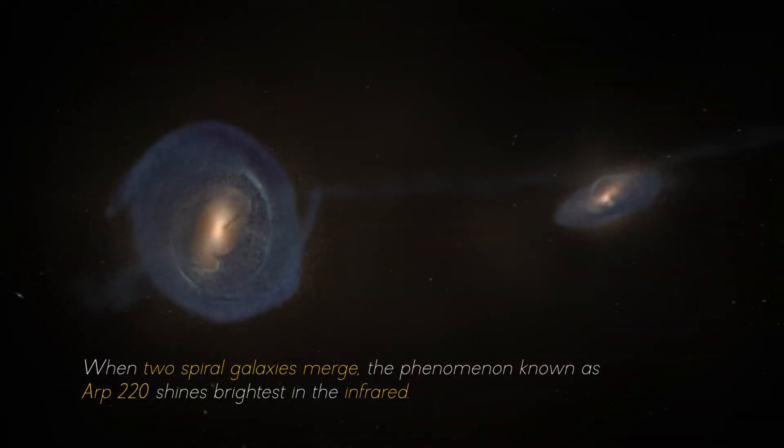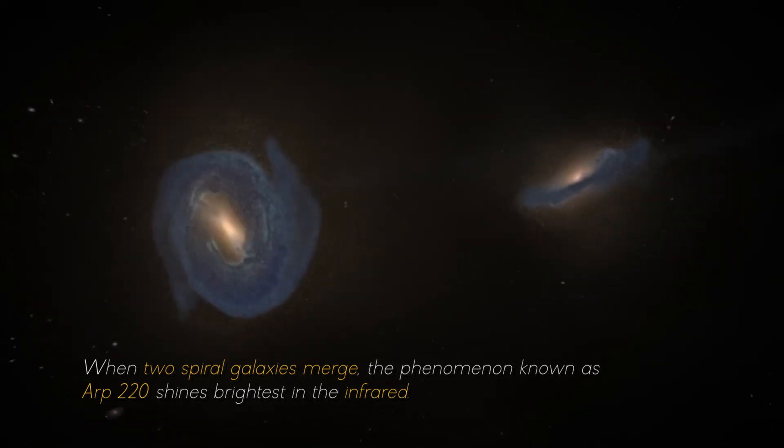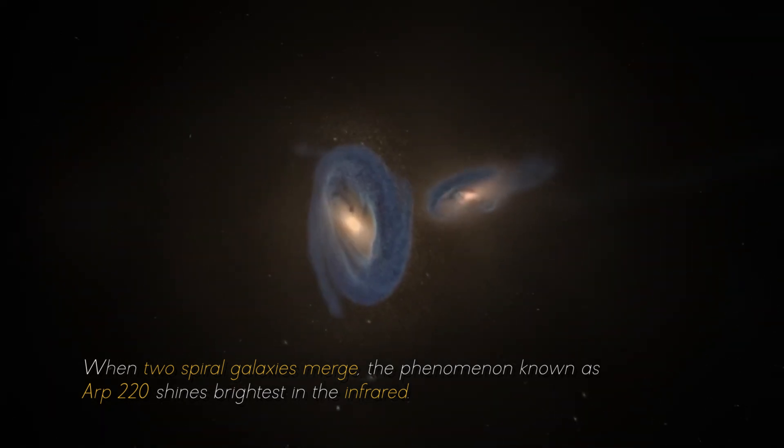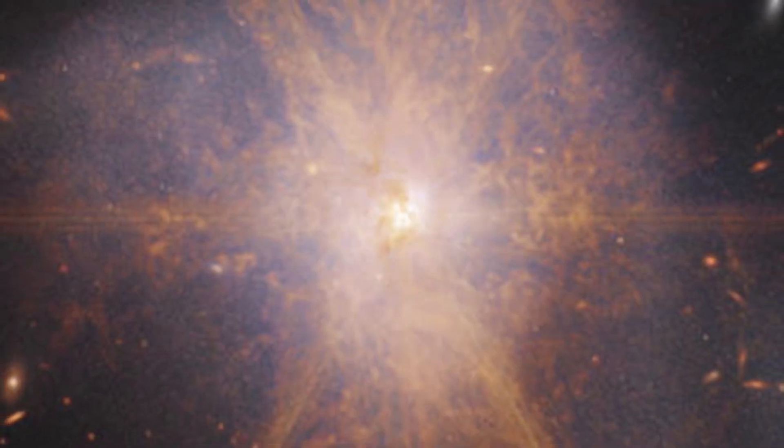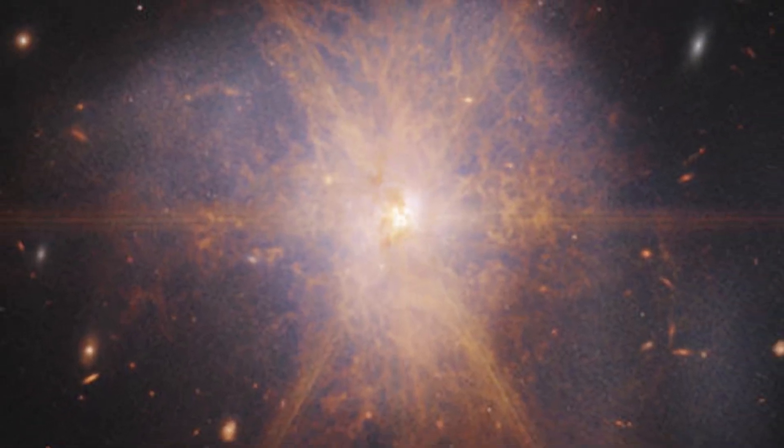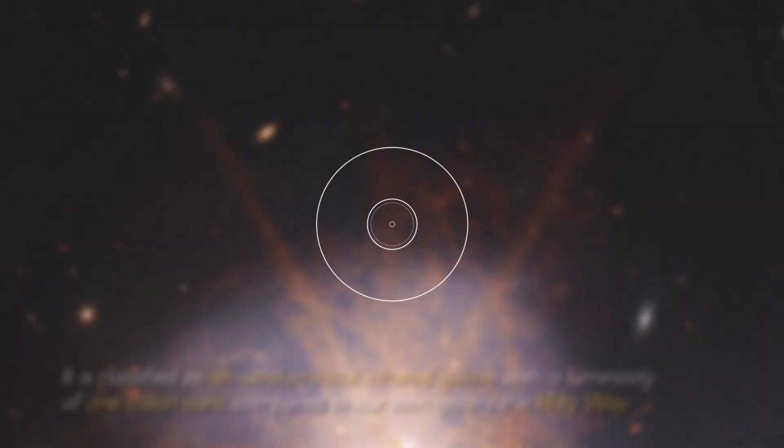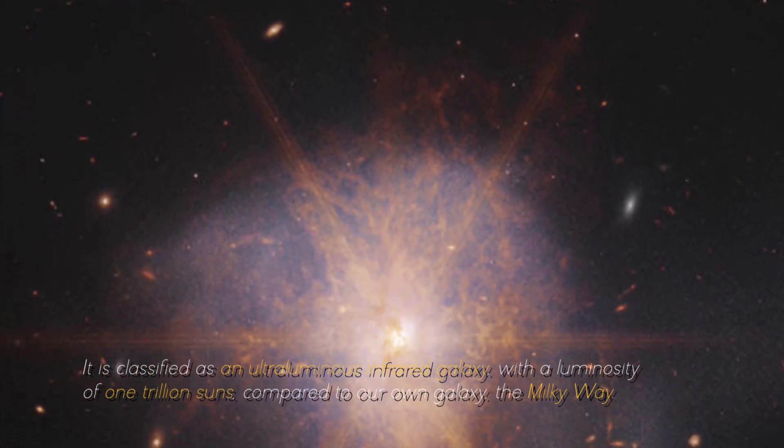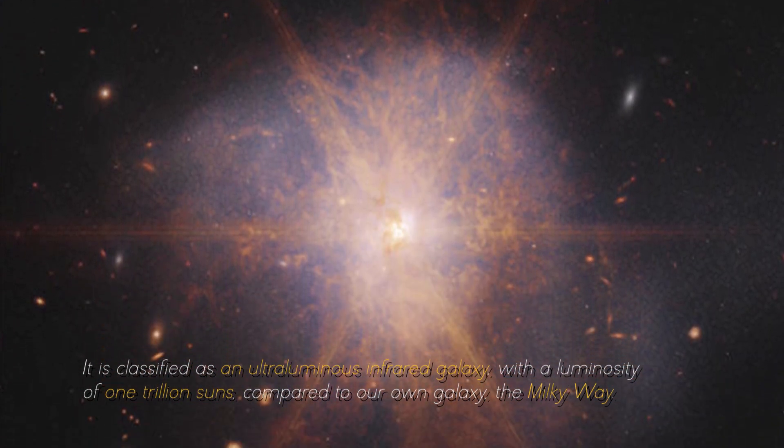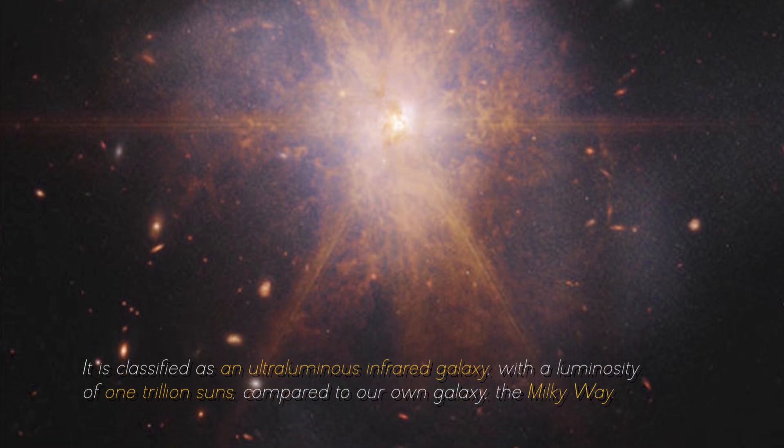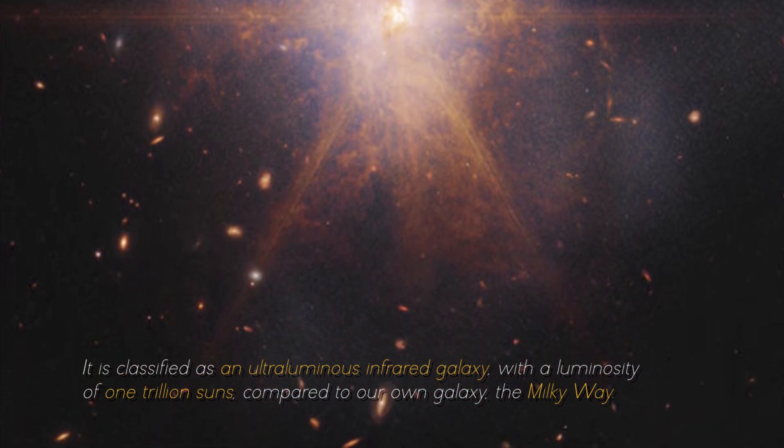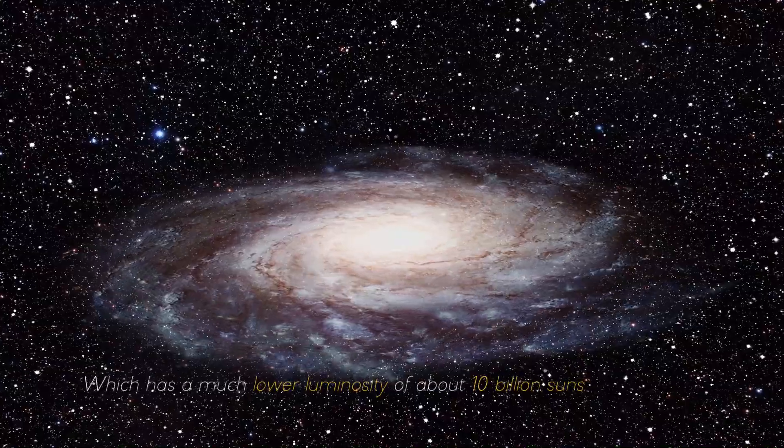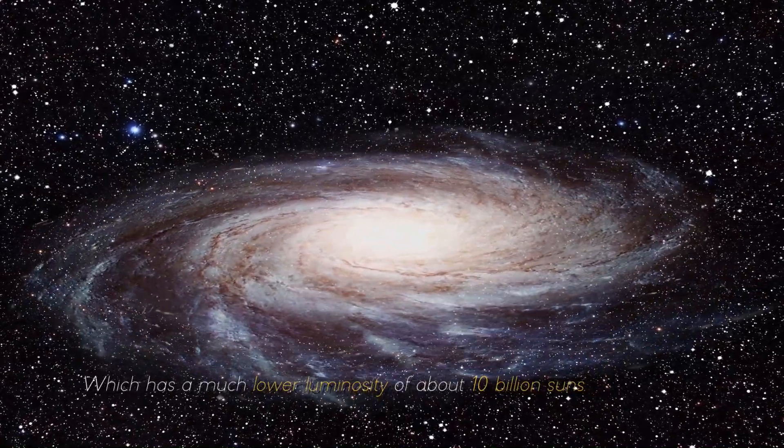When two spiral galaxies emerge, the phenomenon known as ARP 220 shines the brightest in the infrared, making it perfect for observation by the James Webb Space Telescope. It is classified as an ultra-luminous infrared galaxy, with a luminosity of 1 trillion suns compared to our own galaxy, the Milky Way, which has a much lower luminosity of about 10 billion suns.